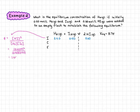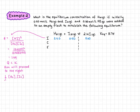We get Q equals 1.44. Comparing to K of 3.75, we see that Q is less than K, so the reaction will proceed to the right to increase the concentration of products. That means we will have a negative change for our reactants and a positive change for our product. We represent the change as x for the reactants and 2x for the product due to its coefficient, giving equilibrium concentrations of 0.50 minus x and 0.60 plus 2x.